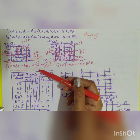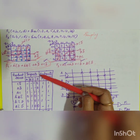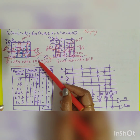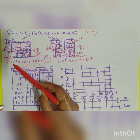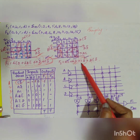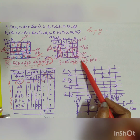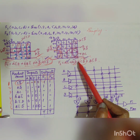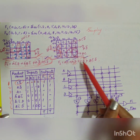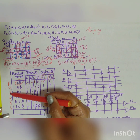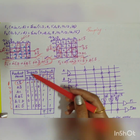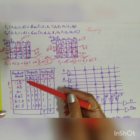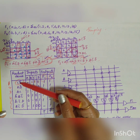The next step is to construct the PLA table. The PLA table consists of product terms, inputs, and outputs. The product terms are: CD̄, AD̄, ĀBC̄, ĀC̄D, and additional terms from F2. Note that CD̄ and AD̄ appear in both outputs. In total there are six product terms. The inputs are A, B, C, D.